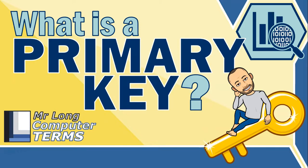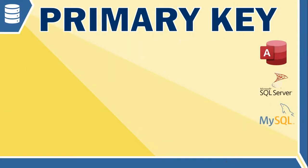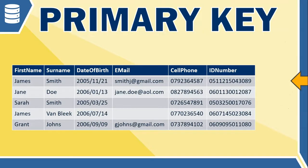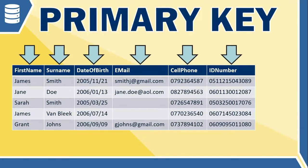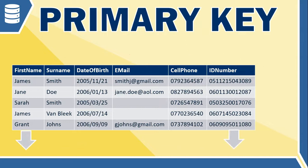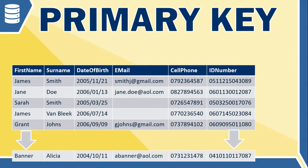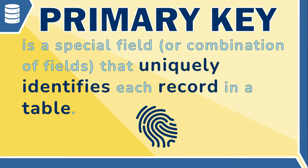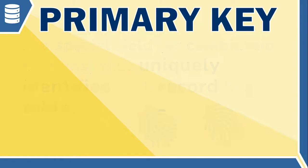What is a primary key? A primary key is a term we use for databases, particularly when referring to tables. They are essential for keeping information organized in a database table. Each row represents a unique record, like a person's information or a product's details. Each record will have fields that describe different aspects, like a person's name, surname, or date of birth. The primary key is a special field, or sometimes a combination of fields, that uniquely identifies each record in a table — like a fingerprint for each record, ensuring no two records are the same.